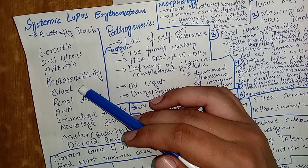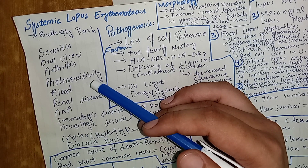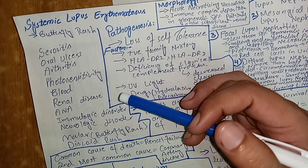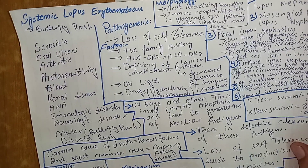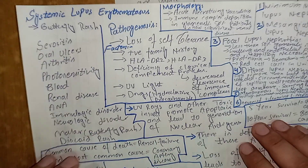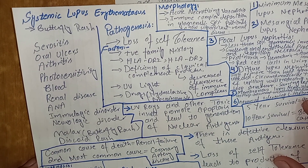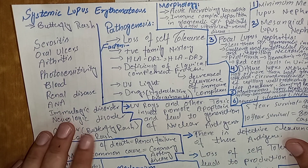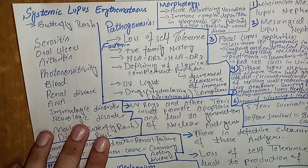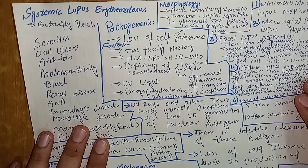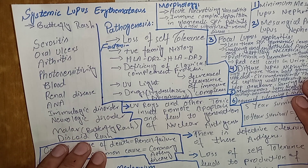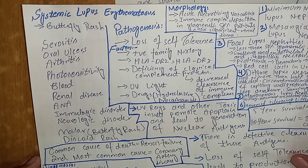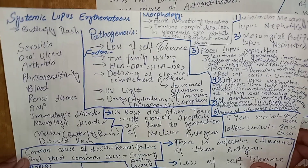In SLE arthritis shows little deformity compared to rheumatoid arthritis. There is photosensitivity, and there can be involvement of blood leading to cytopenias — decrease in RBC count, WBC count, and platelet count. There can be renal disease leading to glomeropathies and nephrotic syndrome, with quite extensive renal involvement in long-standing cases. There are antinuclear antibodies (ANA), immunological disorders causing immune complex deposition in body tissues, neurological manifestations, and macular or discoid rash.